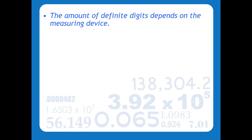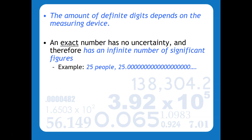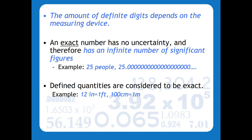The amount of definite digits depends on the precision of the device that you have. An exact number is a number that has absolutely no uncertainty, therefore it has an infinite number of significant figures. Anytime you're counting something, that's usually considered an exact number, so you're going to expect it to have an infinite number of sig figs and there will be no rounding. Defined quantities are also considered to be exact — for example, 12 inches equal a foot and 100 centimeters equals one meter.